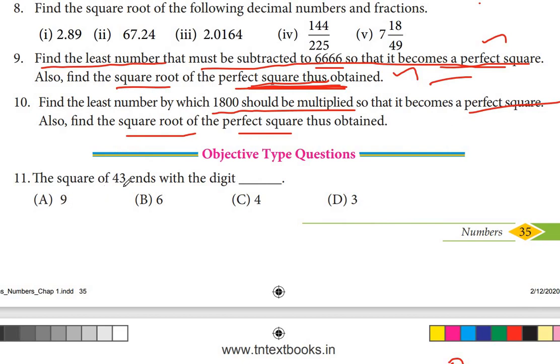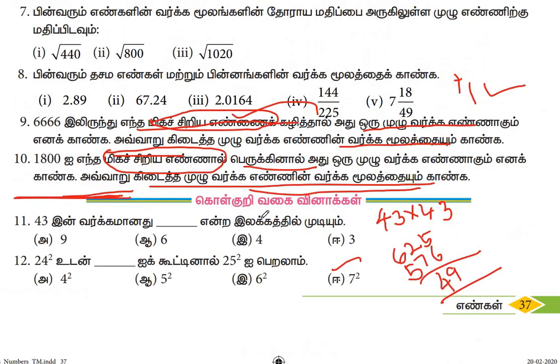The square of 43 ends with the digits: 43, last number is 3 into 3. 3 threes are 9. So 9 will be the last digit.